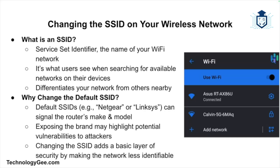One of the first things you should do when configuring a wireless network is to change the SSID. SSID stands for Service Set Identifier — this is simply the name of your wireless network. It's what users see when they search for available Wi-Fi networks on their devices, and it's used to differentiate your network from others in the area.